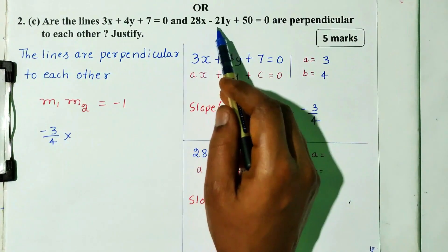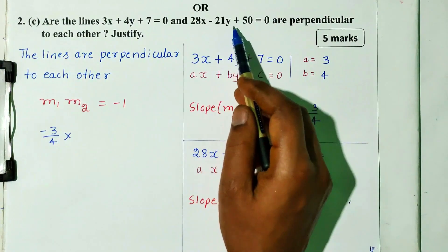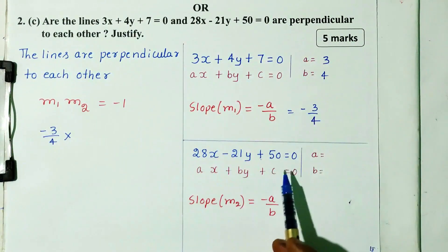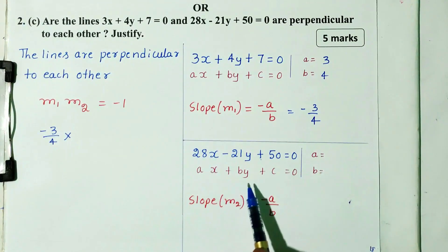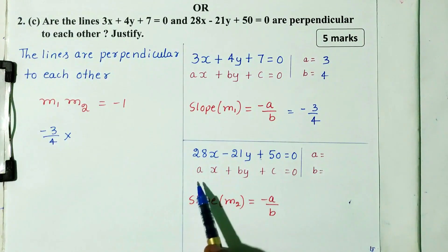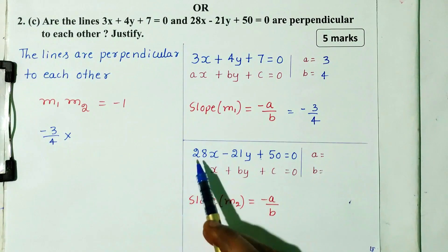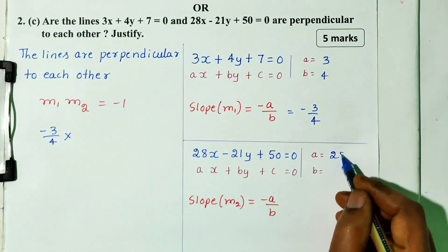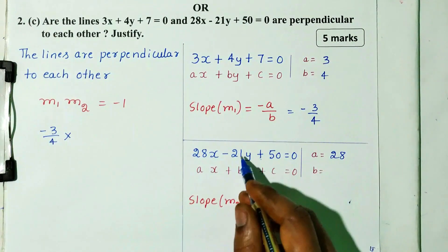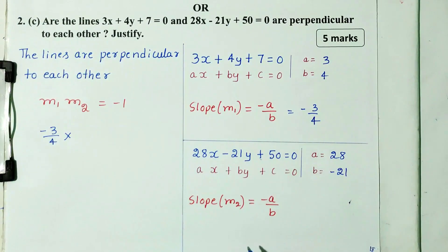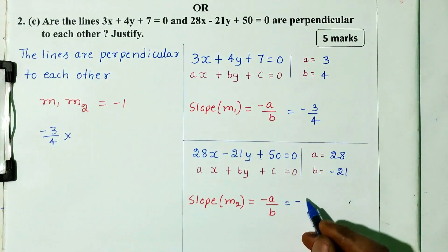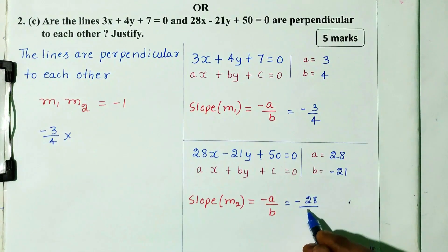Now for m2, the second equation is 28x minus 21y plus 50 equals 0. Comparing with the general equation ax plus by plus c equals 0, here a equals 28 and b equals minus 21.